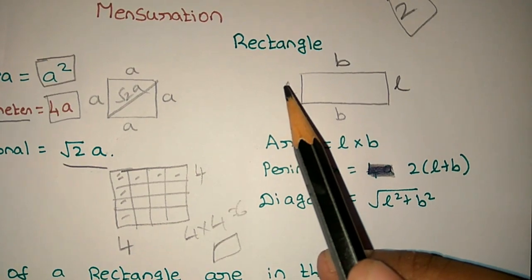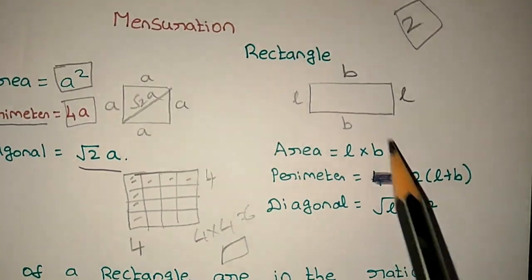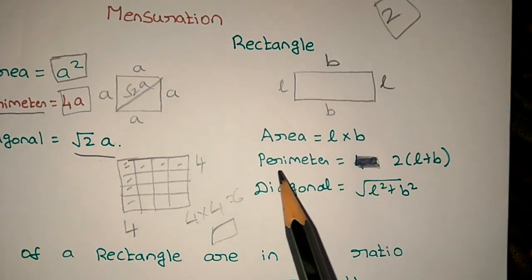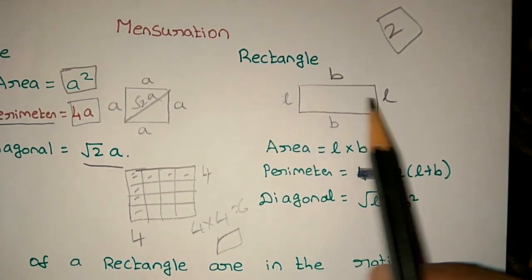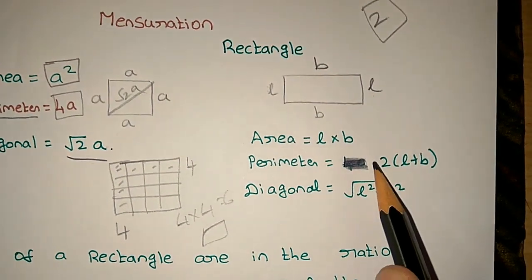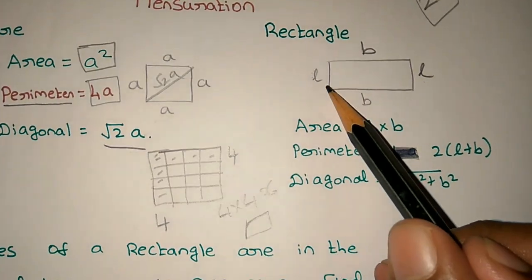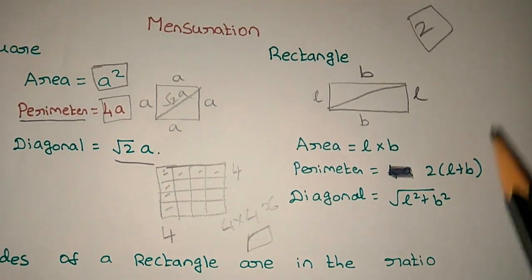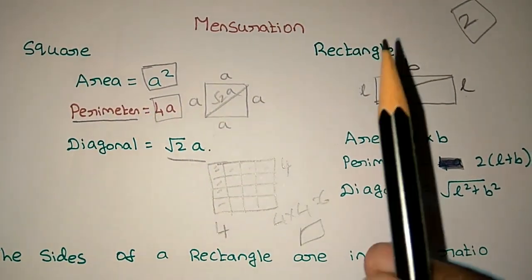Next is the rectangle. The rectangle has length and breadth. The area is equal to length × breadth. The perimeter is 2(L + B). The diagonal is √(L² + B²). This is the rectangle.